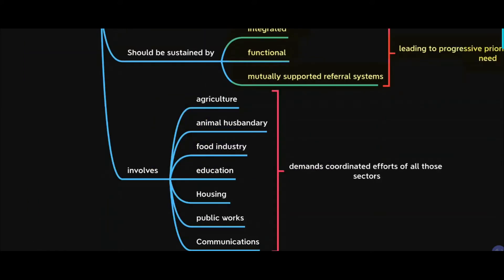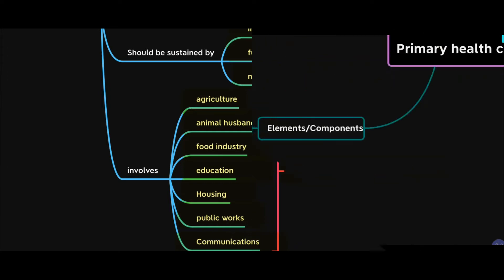The fourth characteristic is that other sectors are also involved in providing primary health care: agriculture, animal husbandry, the food industry, education, housing, public works, and communications. All of these are involved in providing primary health care, and it demands the coordinated efforts of all these sectors.